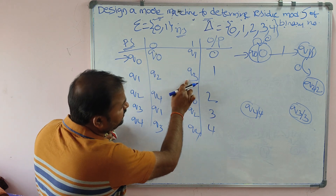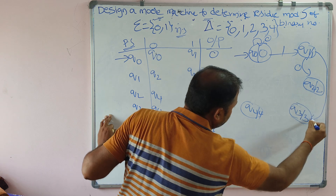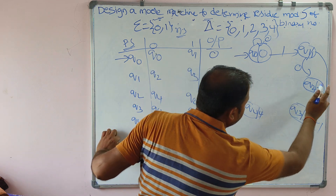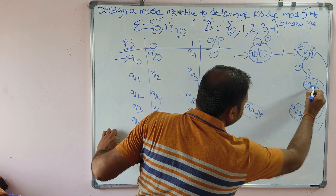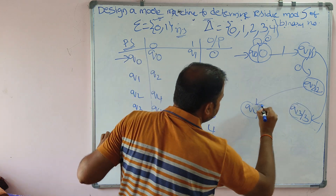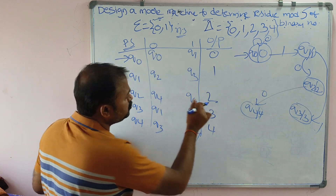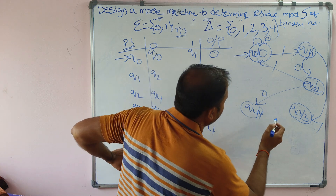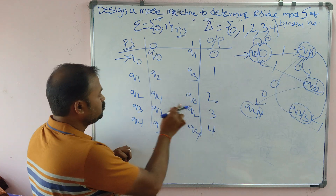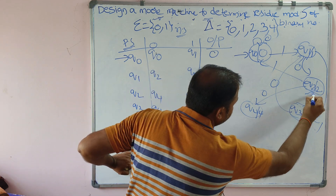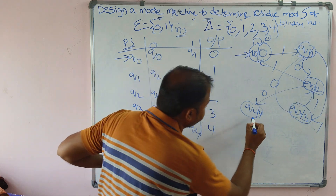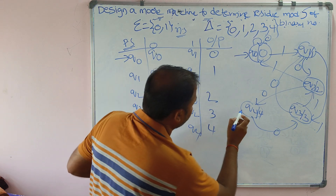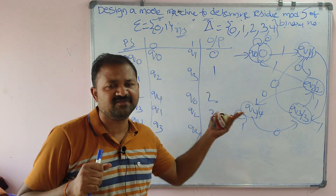Now let us fill the transitions. q0 on 0 goes to q0 — a self-loop. q0 on 1 goes to q1. q1 on 0 goes to q2. q1 on 1 goes to q3. q2 on 0 goes to q4. q2 on 1 goes to q0. q3 on 0 goes to q1. q3 on 1 goes to q2. q4 on 0 goes to q3. q4 on 1 goes to q4 — a self-loop.